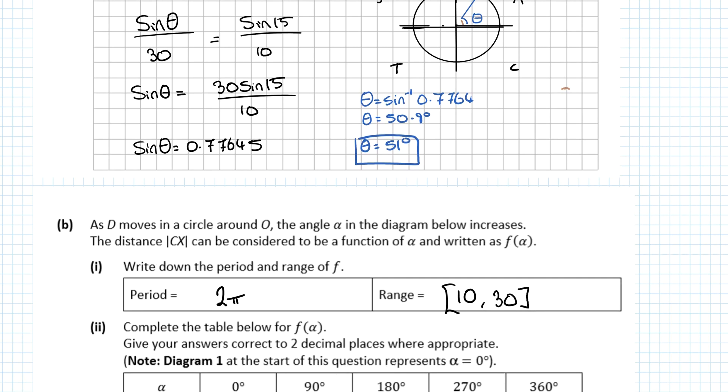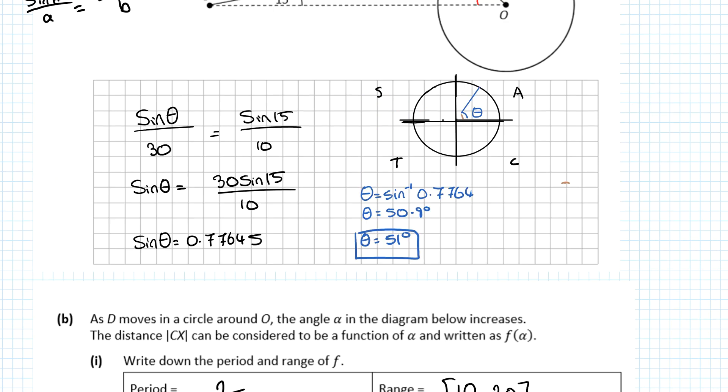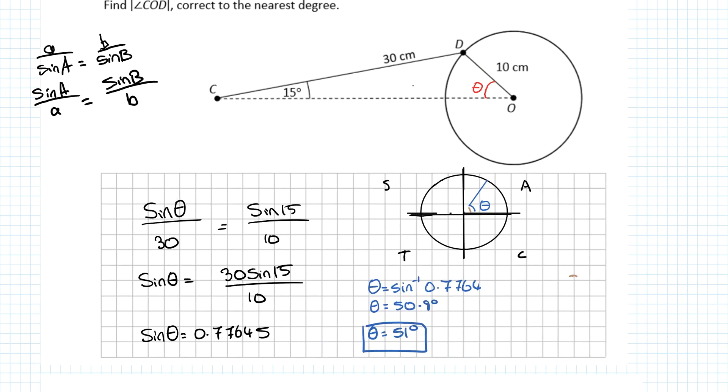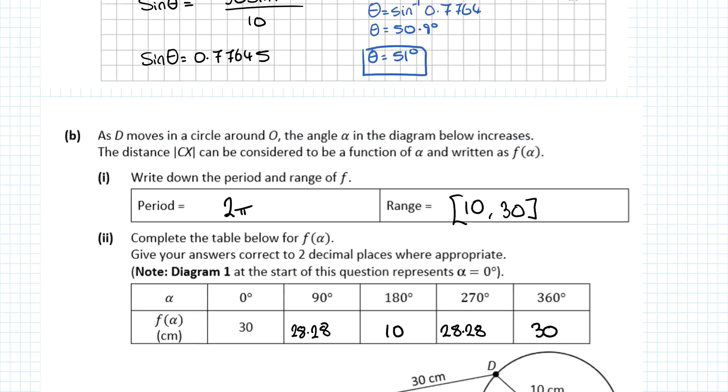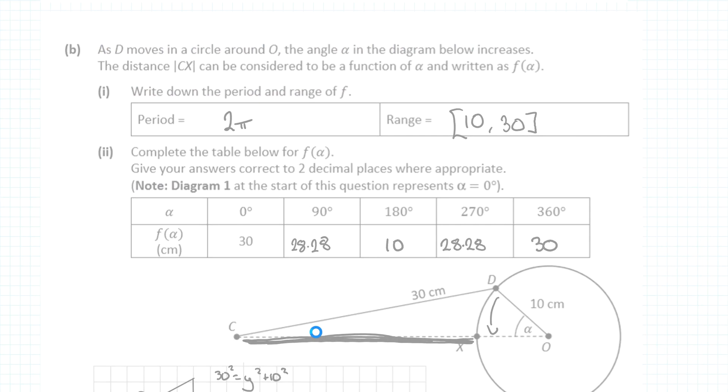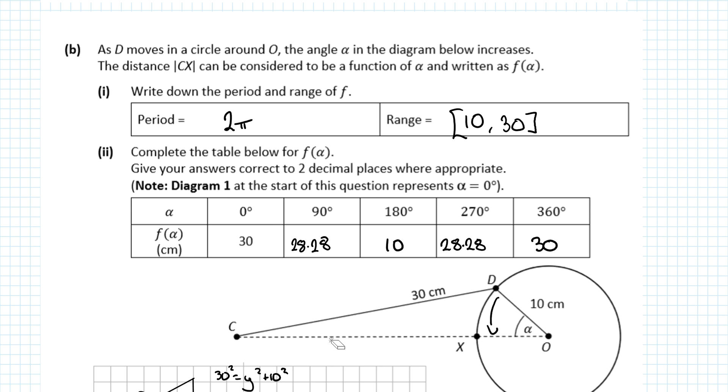The next question: find the period and range of C. The range is the closest and furthest C will get to the circle. What's the maximum length CX could be? If D was all the way down here, C would be at its furthest, giving the full DC length. The maximum value is 30. For the minimum: if D was all the way around here, DC can only be 30 long.